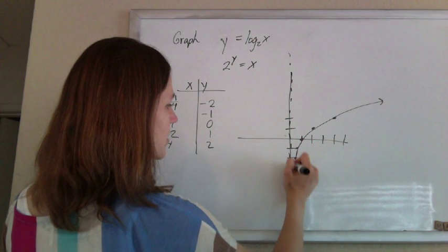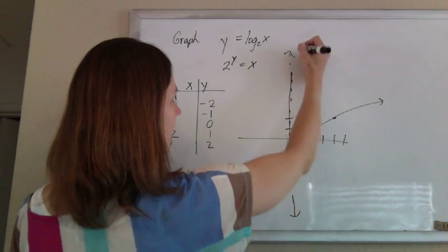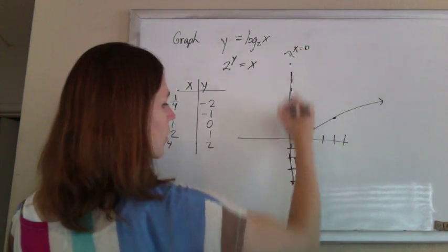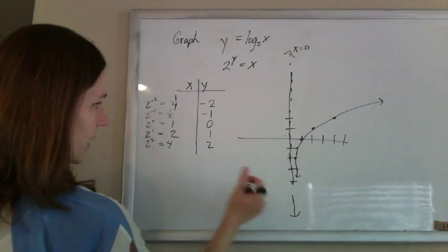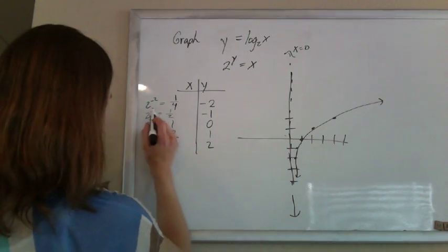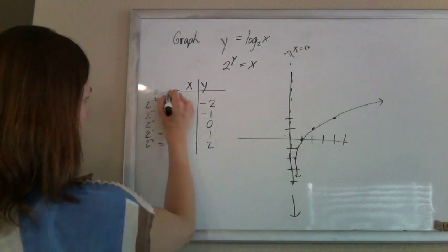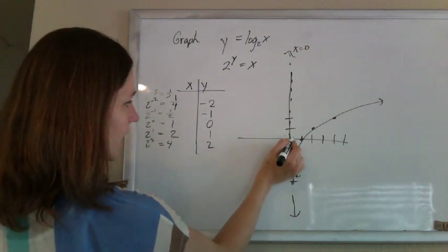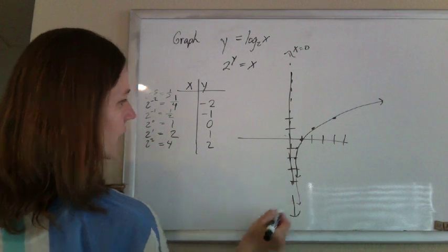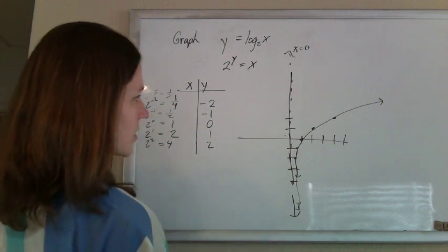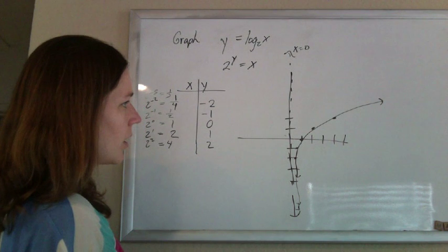The asymptote for these, unless they're shifted, is that line x equals 0. Because no matter what I plug in, even if I plugged in like 2 to the negative 5, that's 1 over 32, I can get close to 0, but I'll never hit it. So it gets closer and closer to 0. And that's that.